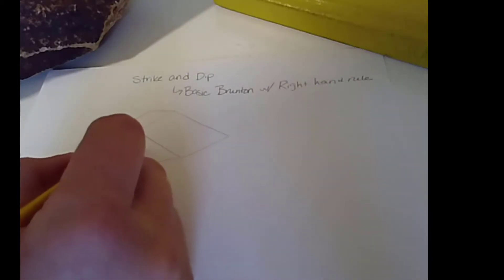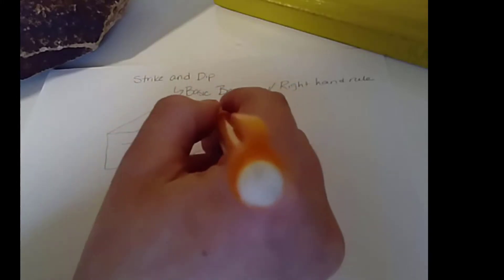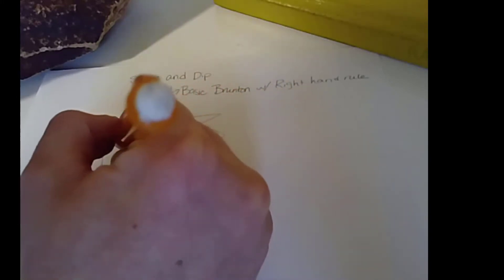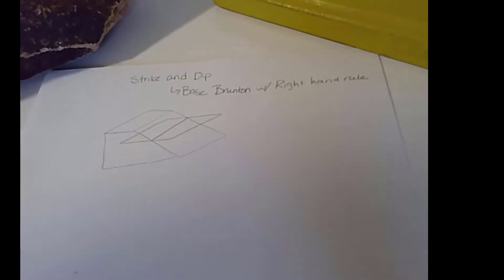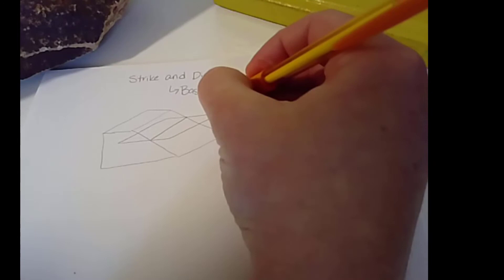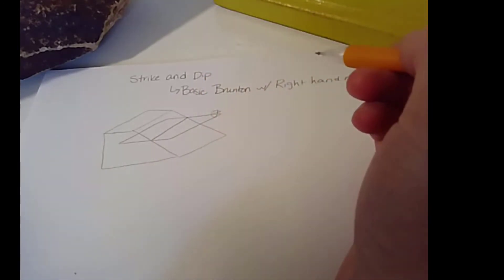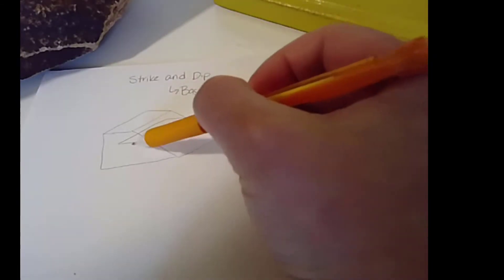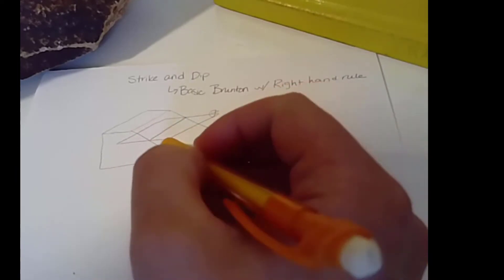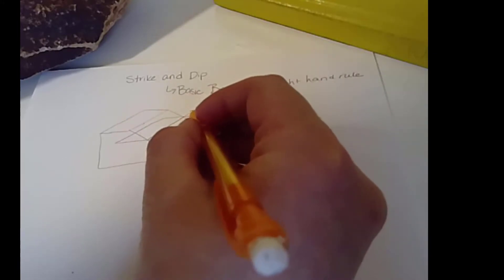What we're actually doing is imagining what the intersection of a horizontal plane and our surface would be. Imagine I set my cup of tea on the surface and the water is perfectly level. This is my horizontal surface, and where that horizontal surface intersects the surface I care about, the orientation of that line is my strike.